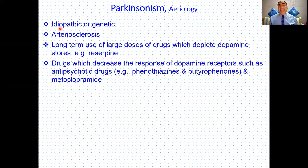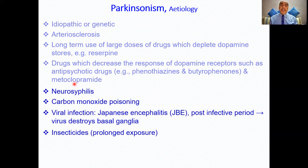Etiology: generally it is idiopathic — we don't know the exact cause. Other etiologies include genetic factors, atherosclerosis, and long-term use of drugs such as those that deplete dopamine stores like reserpine. Drugs that decrease the response of dopaminergic receptors — such as antipsychotics and the anti-emetic metoclopramide — can also cause it, as can syphilis, carbon monoxide poisoning, viral infection destroying the basal ganglia, and prolonged exposure to insecticides.